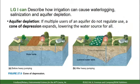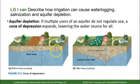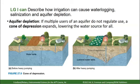Aquifer depletion: if multiple users of an aquifer do not regulate use, a cone of depression expands, lowering the water source for all users. This is an example of the tragedy of the commons when the water table is owned in common. In the western United States people often own specific water rights, but in the eastern United States, where water rights are shared by many and unregulated, these depletion problems can occur.